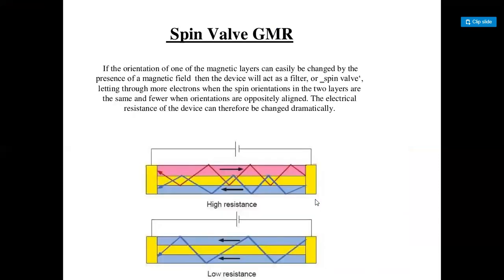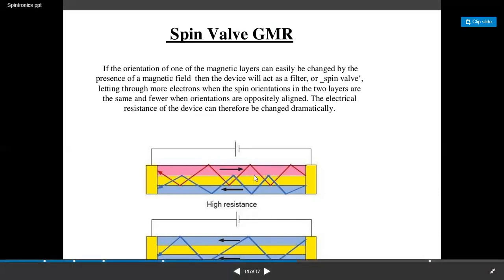This is the spin valve application of GMR. If the orientation of one of the magnetic layers can easily be changed by the presence of a magnetic field, the device will act as a filter or spin valve, letting through more electrons when the spin orientations in the two layers are the same, and fewer when orientations are oppositely aligned. The electrical resistance of the device can therefore change dramatically, as shown in the simple diagram of high and low resistance states.